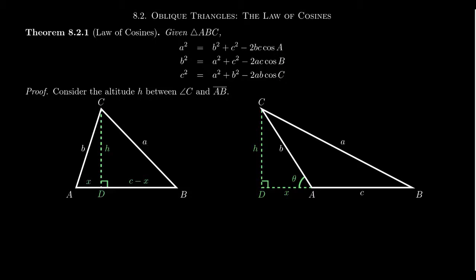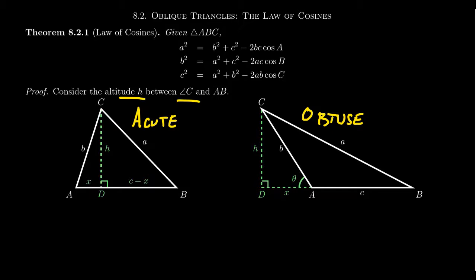So why does the law of cosines hold? Like the law of sines, the proof requires we separate into two cases: the acute case and the obtuse case. In this proof we're going to focus on angle C and consider its altitude. An altitude of a triangle is a line segment that connects one vertex and is perpendicular to the opposite side. We're going to focus on the altitude of angle C and break up our triangle into two right triangles.